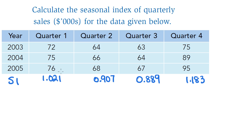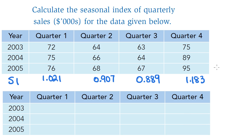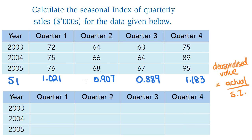Once you know the seasonal index numbers — whether you've worked them out or been given them — you can de-seasonalize the data. De-seasonalizing smooths out seasonal fluctuations. The formula is: de-seasonalized value equals the actual value divided by the seasonal index. For the figure 72, we do 72 divided by its seasonal index of 1.021.